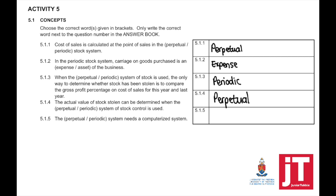5.1.5: the perpetual system needs a computerized system — it's expensive — whereas with a periodic inventory system, you do not need a computerized system. So 5.1.5 basically focused on concepts and theory. Make sure that you study your theory. These are easy marks to get in an exam or in a test.